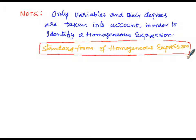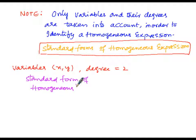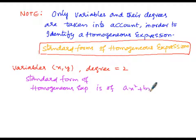First, let us consider the variables x and y. If the degree of each and every variable is 2, then the standard form of the homogeneous expression will be ax² + bxy + cy², where a, b, c are the coefficients — real numbers or real constants.